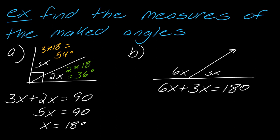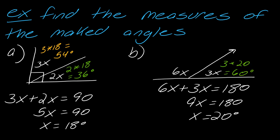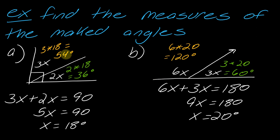For the other problem, there's a straight line — so a straight angle of 180 degrees. I take 6x and 3x, and those have to equal 180. So 9x equals 180, and x equals 20 degrees. The first angle is 6 times 20 = 120 degrees, and the second is 3 times 20 = 60 degrees. You can do a quick sanity check: 60 and 120 definitely add to 180, so it all checks out.